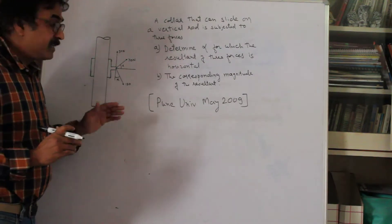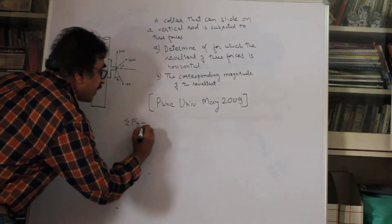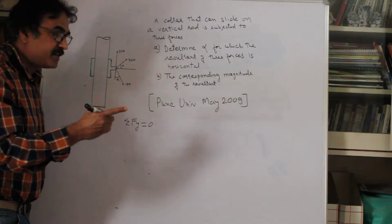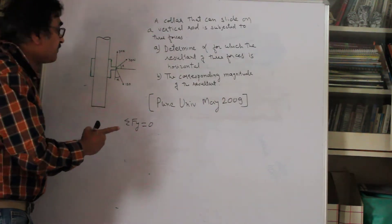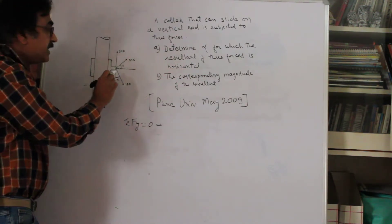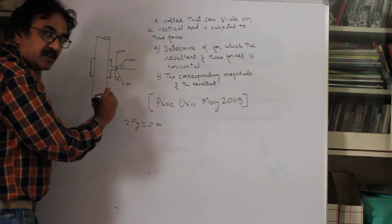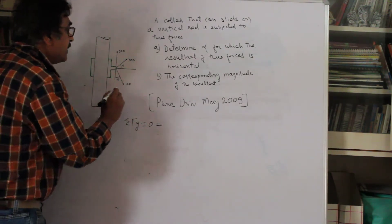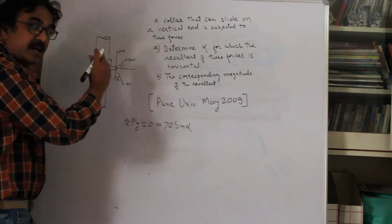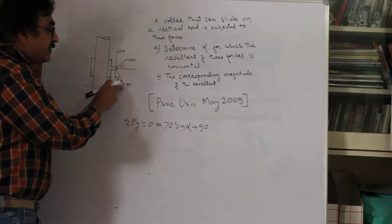We will set sigma Fy equal to zero, because the resultant is horizontal. To determine the value of the horizontal resultant, we resolve all forces vertically. Taking the positive x-axis rightward, positive y-axis upward: the 70N force resolved vertically gives 70 sine alpha (positive upward), the 90N force is entirely vertical (positive), and then we come to the third force.